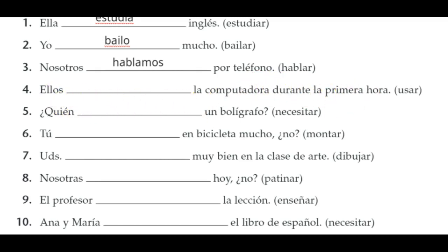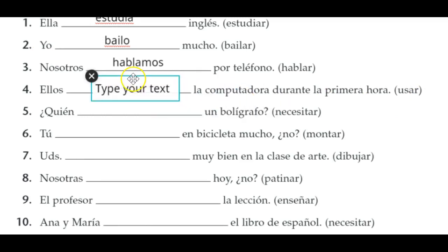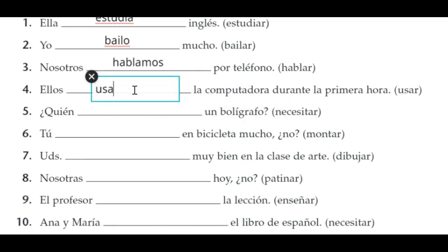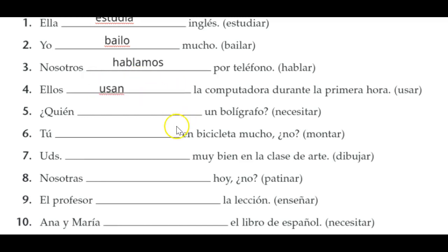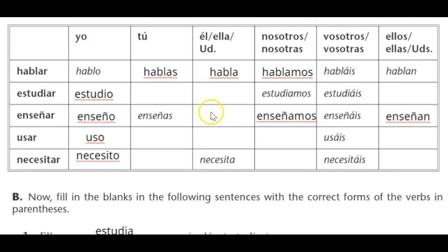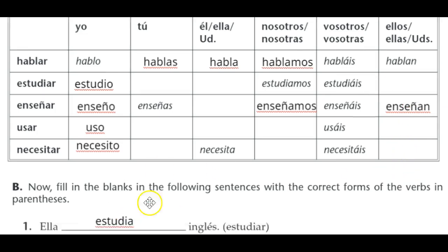Ellos — they — they use the computer: ellos usan la computadora. So the ellos/ellas/ustedes forms of these verbs are: usan, hablan, estudian, enseñan, usan — they all follow the same AN ending pattern.